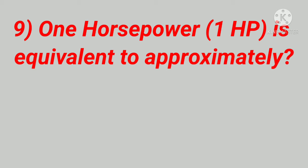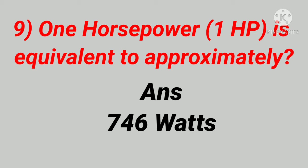One horsepower is equivalent to approximately? Answer: Seven hundred forty-six watts.